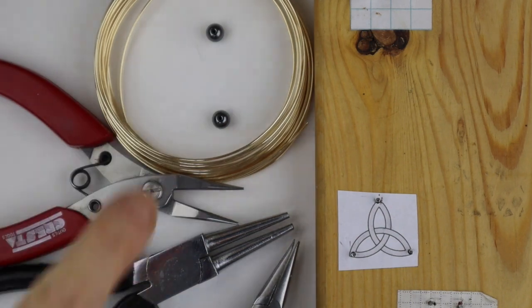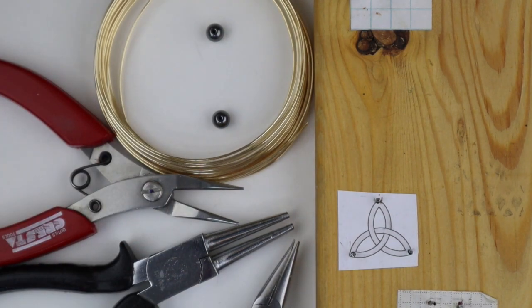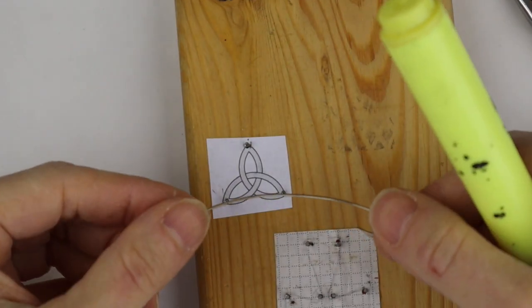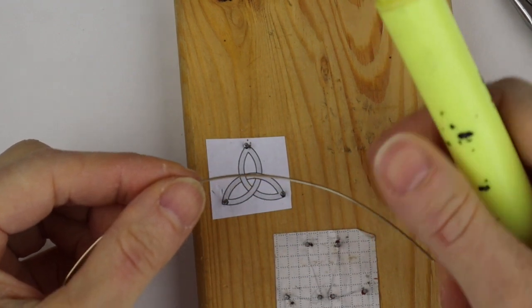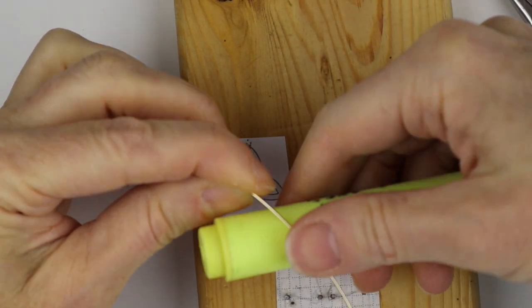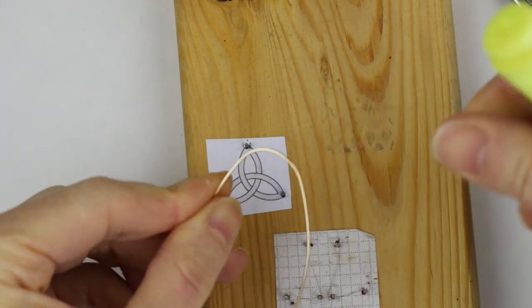I'm going to use 20 gauge wire, six millimeter beads, and I have my tools. So we can start with about a five inch piece of wire and we want to just get it started on the highlighter.